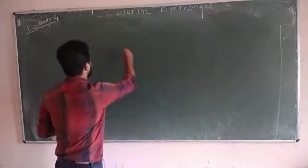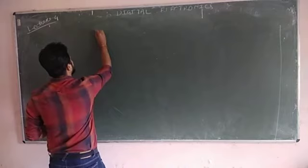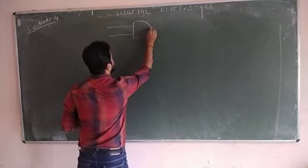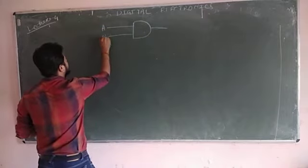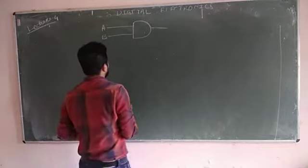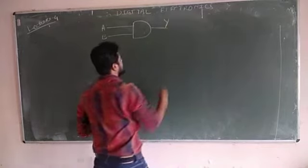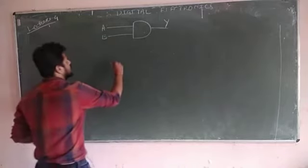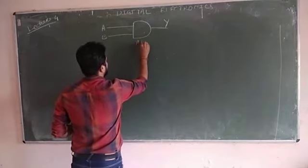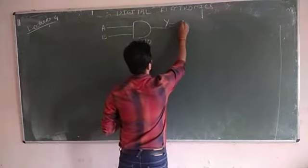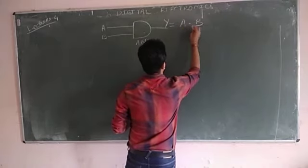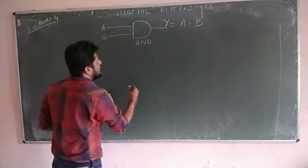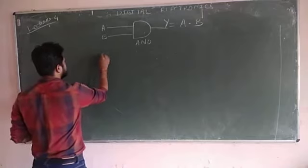Let me draw the symbol for the NAND gate. The minimum input for a NAND gate is two, but it can have more than two inputs also. This is the symbol for the NAND gate. The output is equal to A dot B, where the dot represents the AND operation.